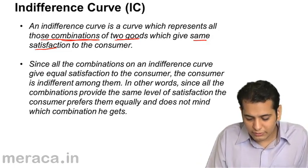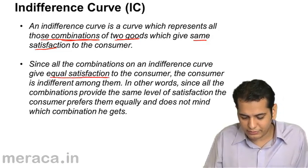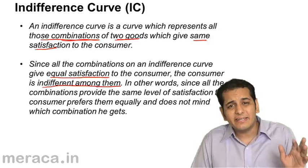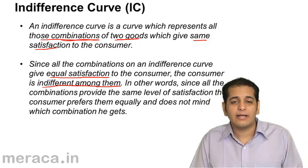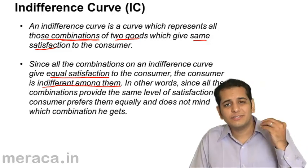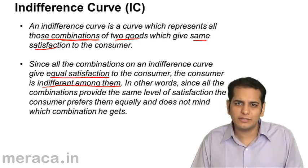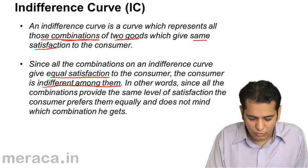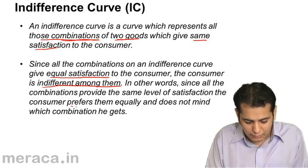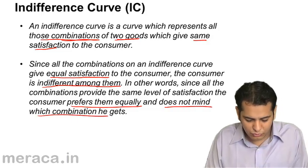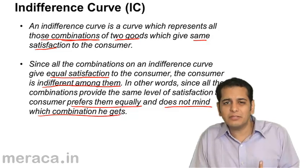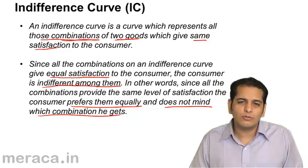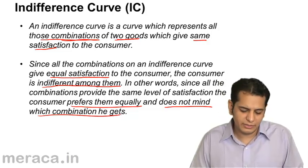Since all the combinations on the indifference curve give equal satisfaction to the consumer, the consumer is indifferent among them. It does not matter to him which combination he consumes, because whichever combination he chooses will give him the same level of satisfaction. In other words, since all the combinations provide the same level of satisfaction, the consumer prefers them equally and does not mind which combination he gets. All the combinations are equal for him.